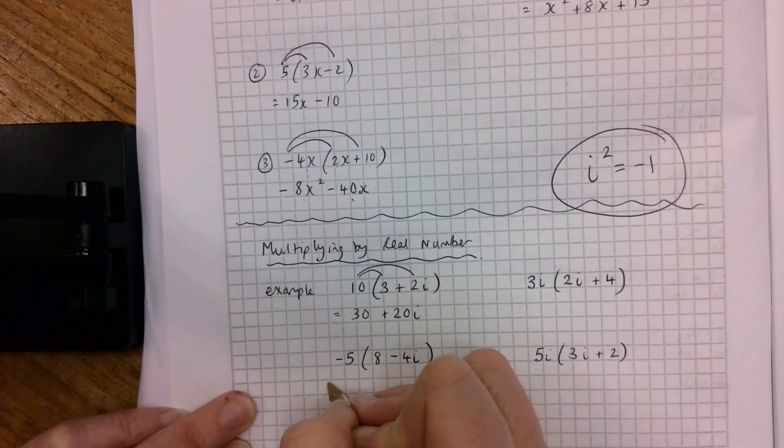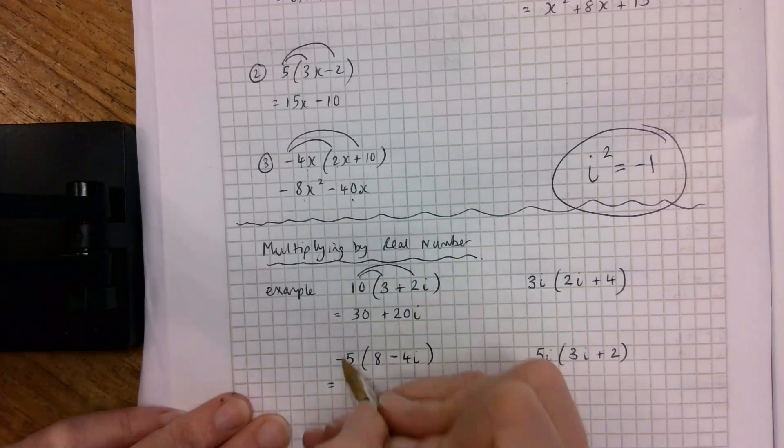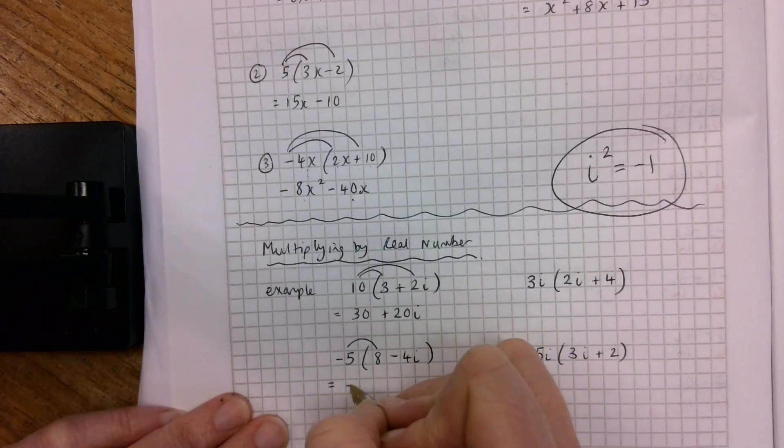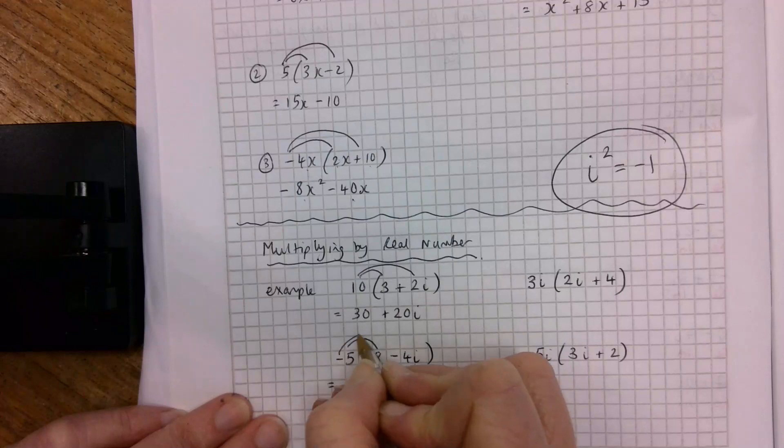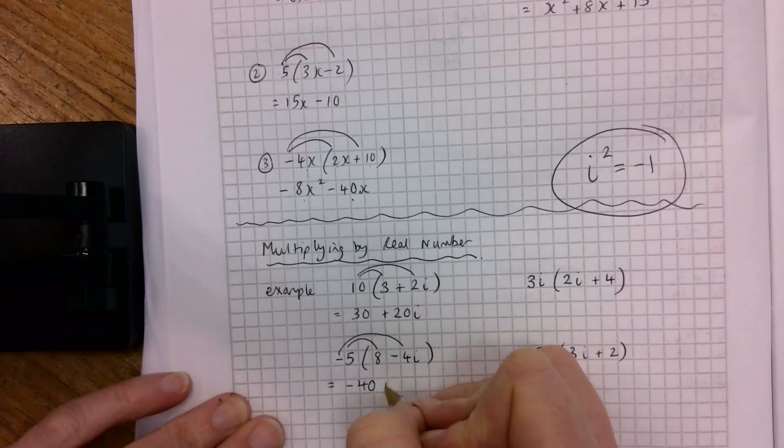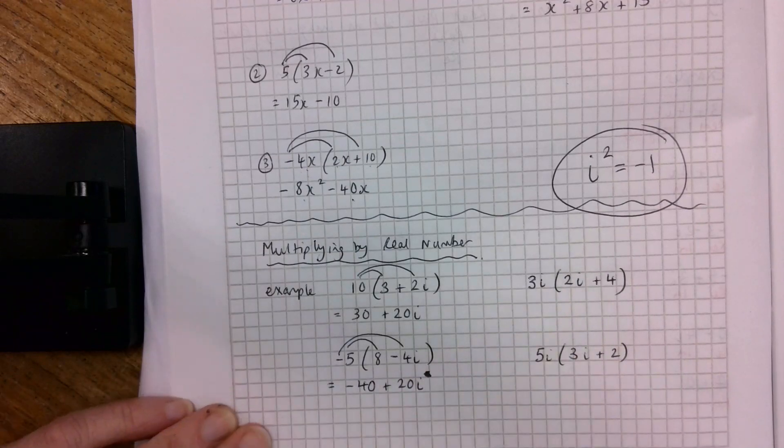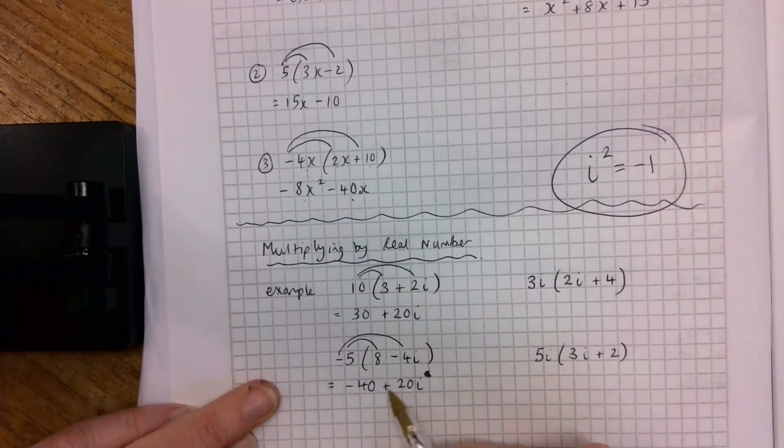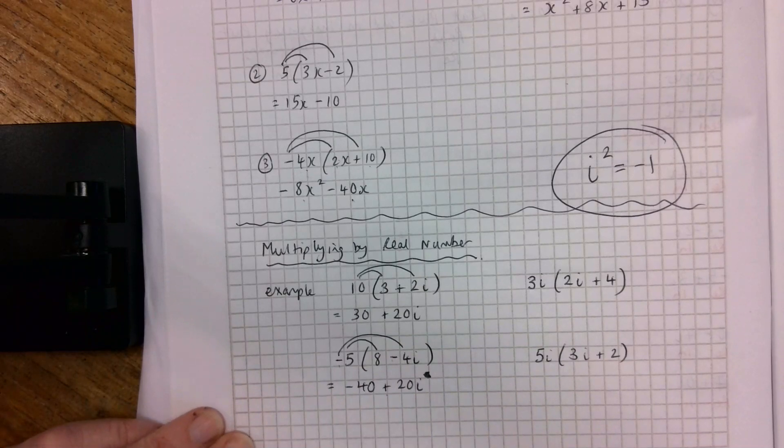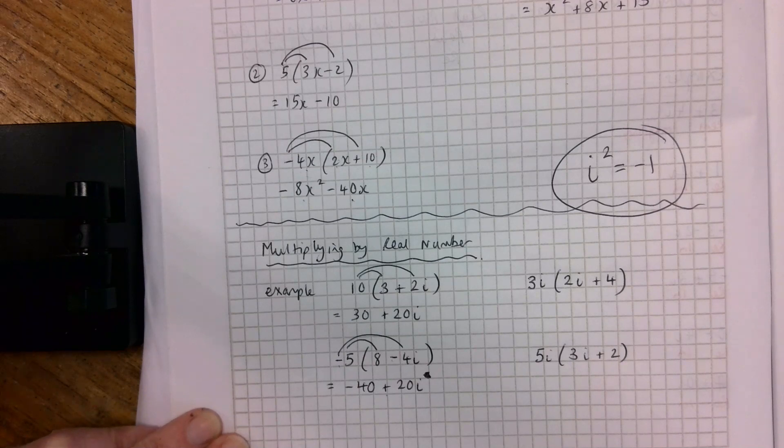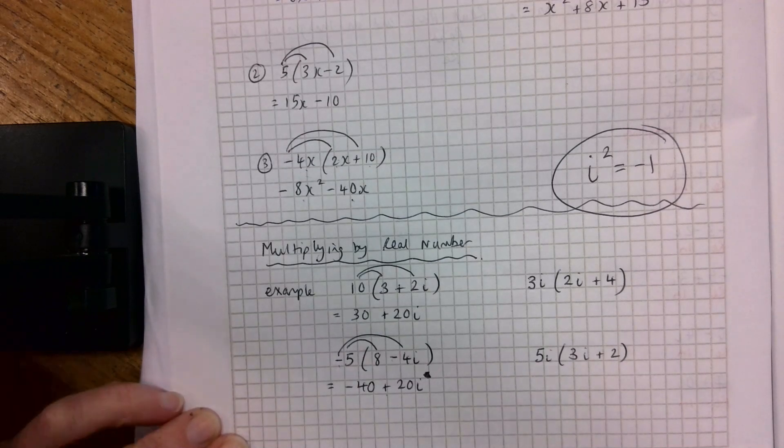For the second one here, minus 5 by 8 is minus 40, and minus 5 by minus 4i is plus 20i. So minus by a minus is a plus, and 5 by 4 is 20. And it's 20i. So we've got minus 40 plus 20i. So those two shouldn't cause you any trouble. It's just that instead of an x, you've got an i.